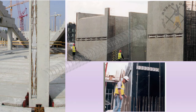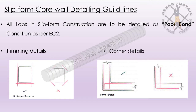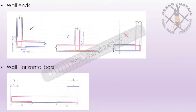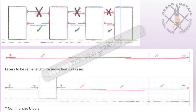For slip form core detailing guidelines: we need to follow pour bond as per EC2. Trimmers are accepted but do not provide anti-crack bars. Detail as U-bars instead of L-bars. Wall horizontal bars are to be stopped before the corner or junction at a distance of at least 50 to 100 mm. Wall horizontal bars and U-bars are to be the same length. These conditions help to cast the rebar fast in the slip form method.